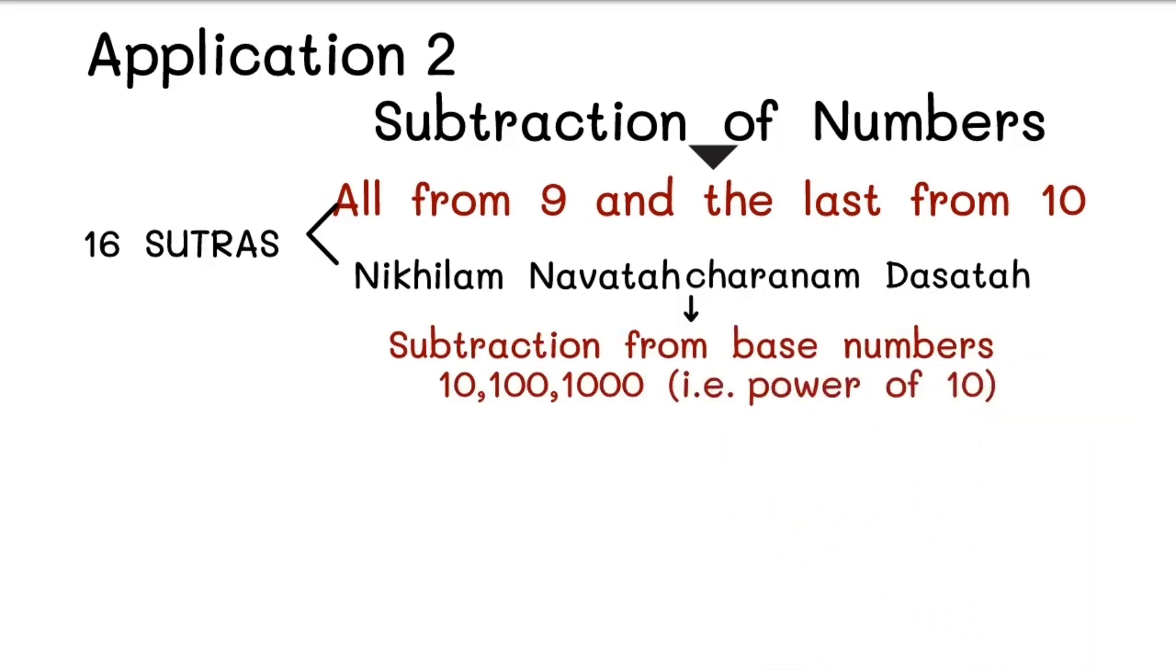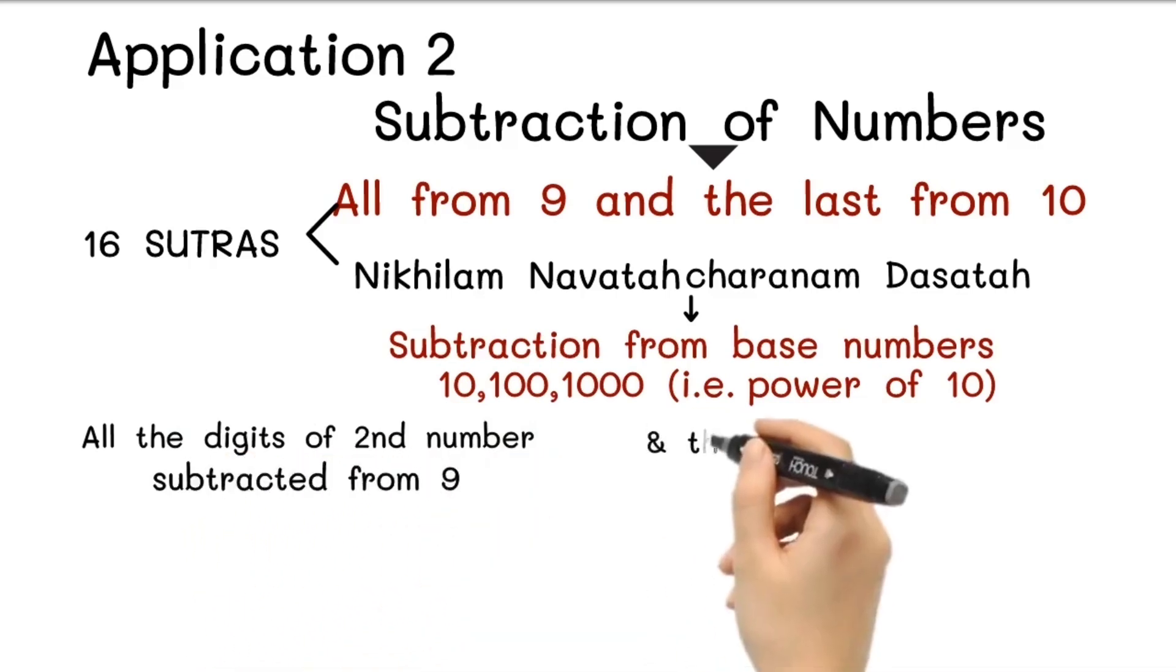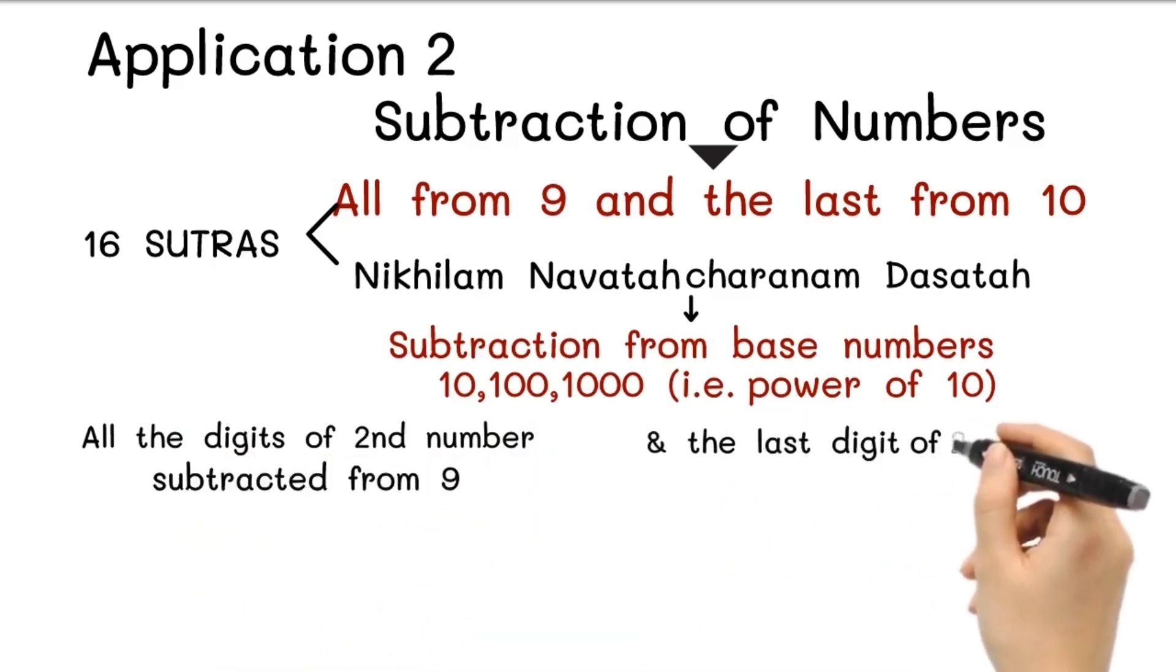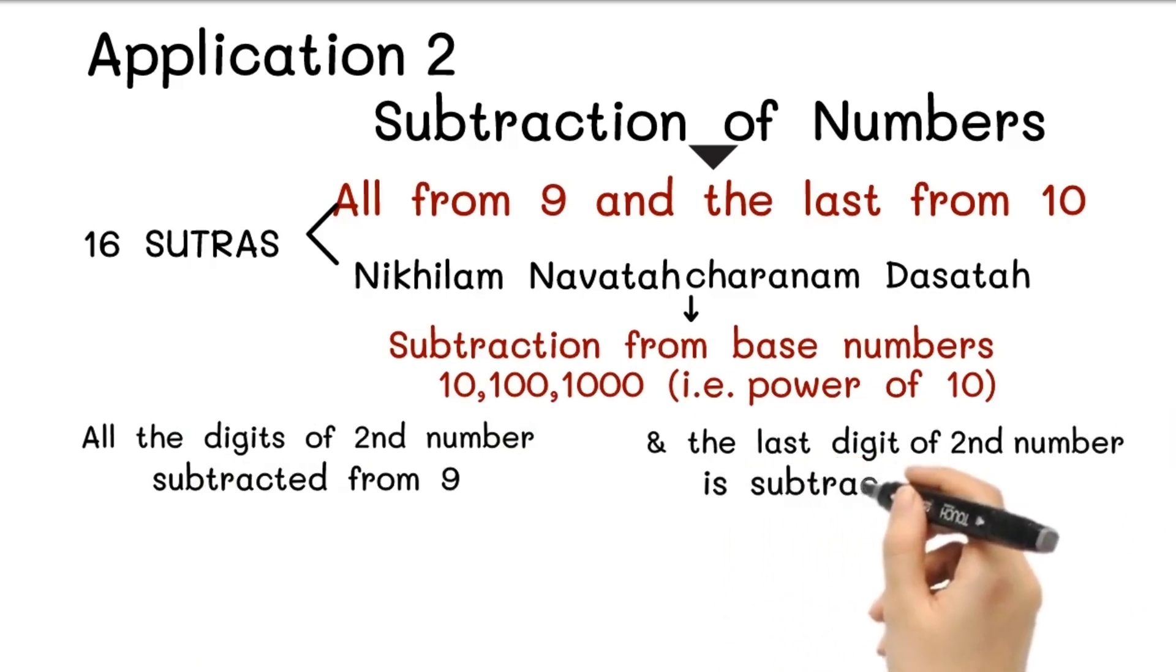This is a very important formula that can be used for subtraction from base numbers like 10, 100, 1000, that is powers of 10. Here all the digits of second number are subtracted from 9, and the last digit of second number is subtracted from 10.